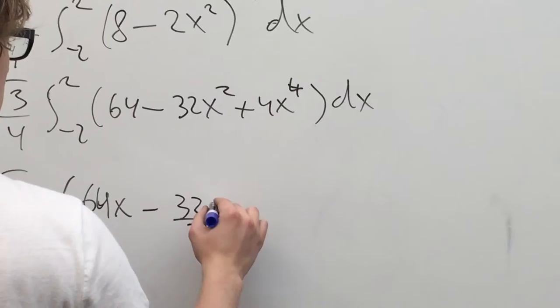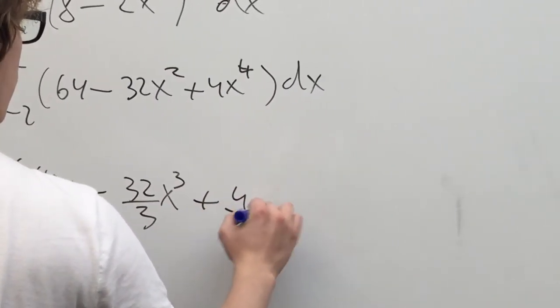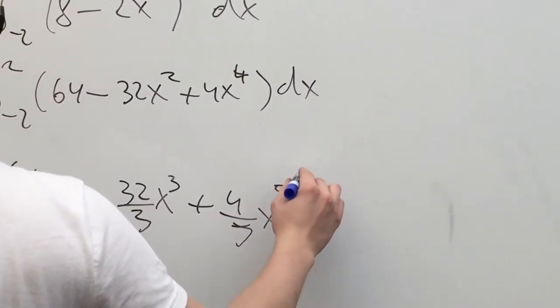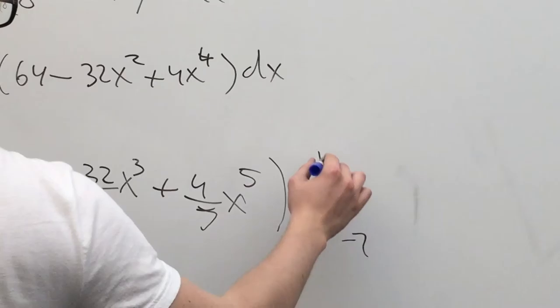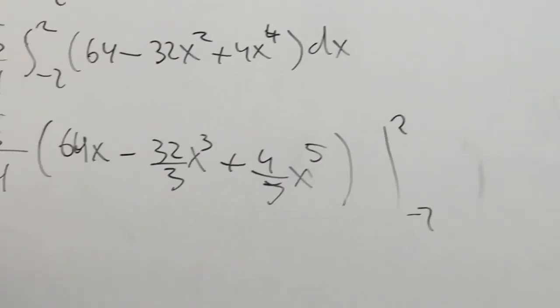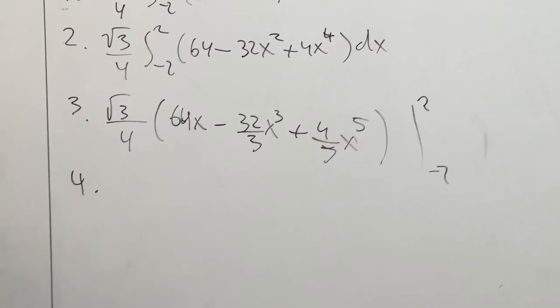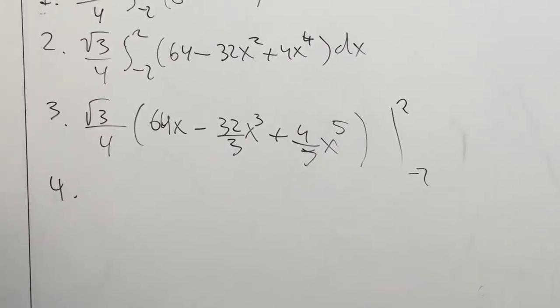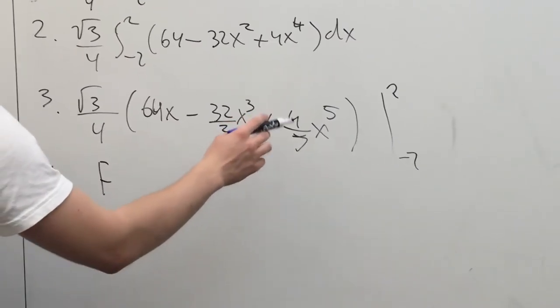Now we can take the antiderivative of each individual term. We get 64x minus 32 over 3 times x cubed plus 4 over 5 times x to the fifth, evaluated from negative 2 to 2.